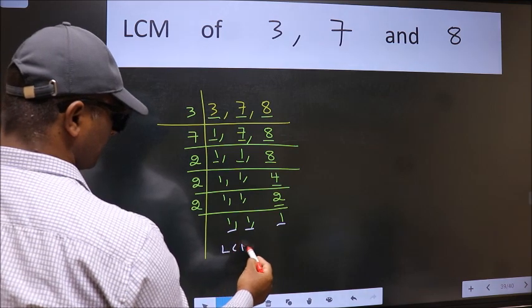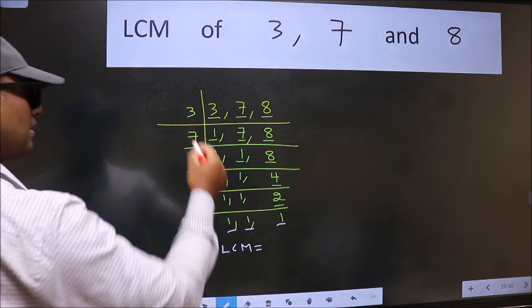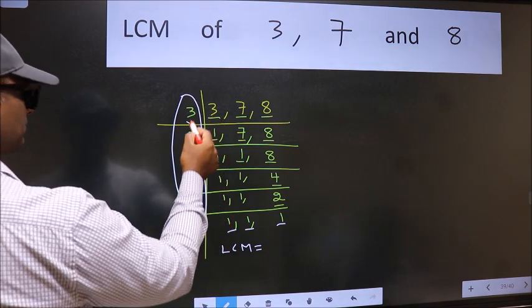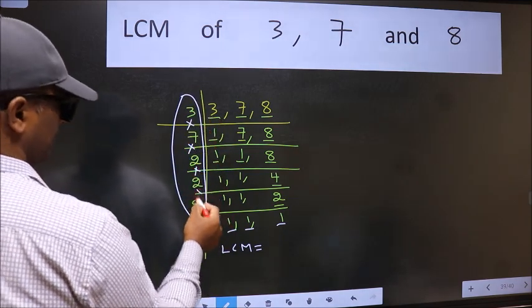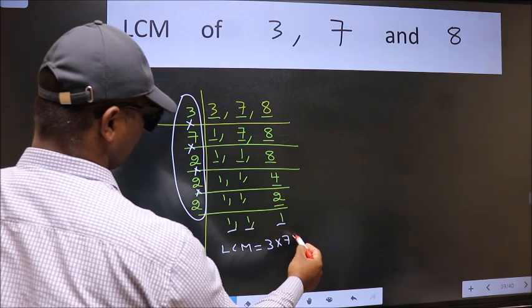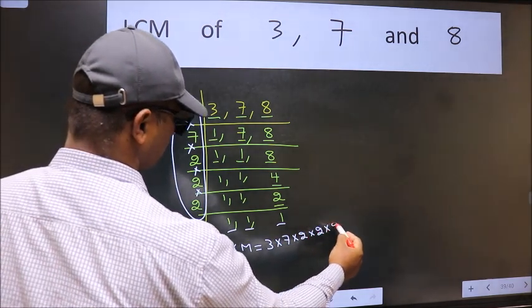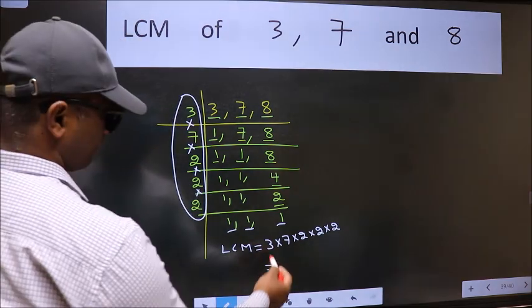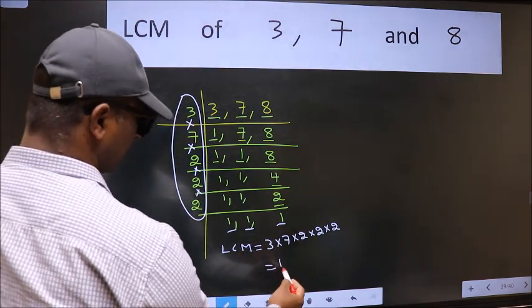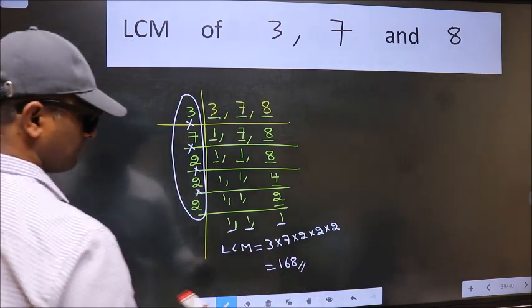So our LCM is the product of these numbers. That is 3 × 7 × 2 × 2 × 2 × 2. When we multiply these numbers, we get 168 as our LCM.